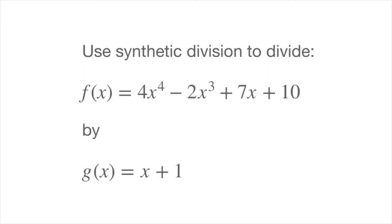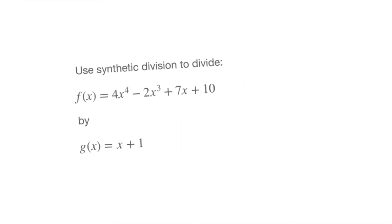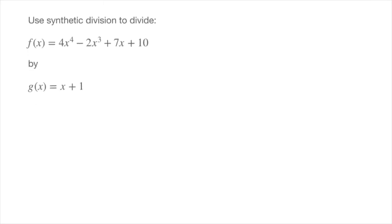In this second example, we're asked to use synthetic division to divide f of x, which equals 4x to the power of 4 minus 2x cubed plus 7x plus 10, by g of x which equals x plus 1. Why not press pause and try solving this yourself? I'll start by moving this to the side, and now we can get started.